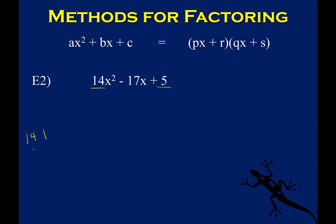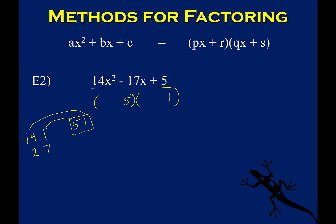The factor pairs are: 14 times 1 and 7 times 2 for 14, and 5 and 1 for the constant term. The only option for 5 is 5 times 1. Now I need to figure out which factor pair of 14 works with 5 and 1 to get 17. Certain things are obviously not right — 5 times 14 is a big number, and 1 times 1 is 1, so there's no way to add or subtract those to get 17. If I try 14 times 1 and 5 times 1, I get 14 and 5, and I can't make 17 with that either. So 14 and 1 is out.